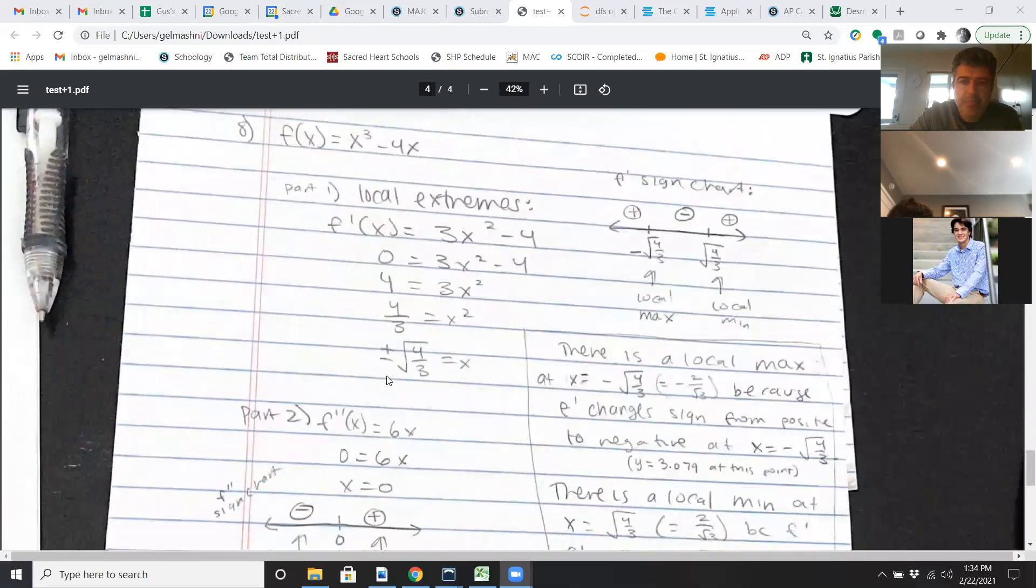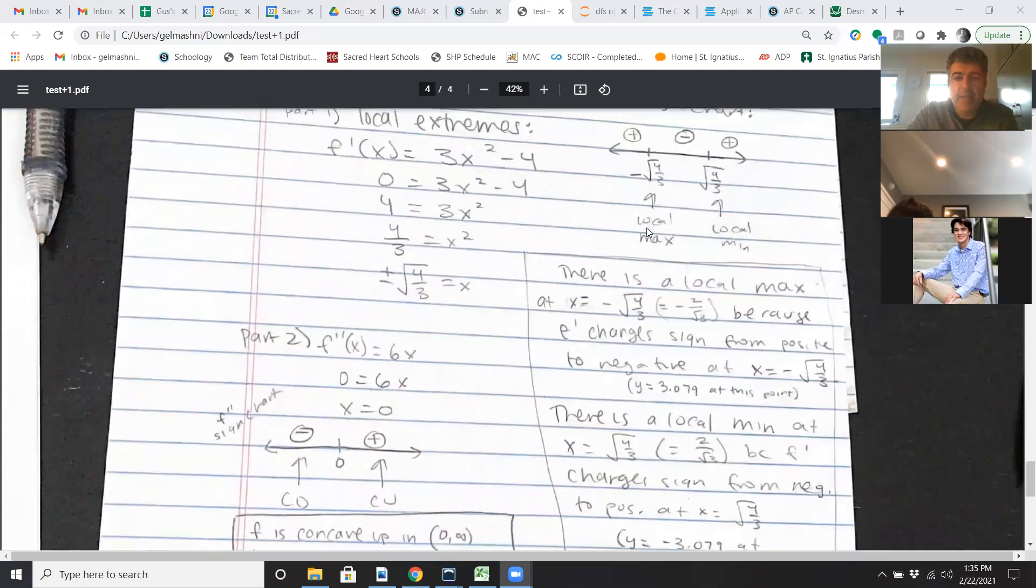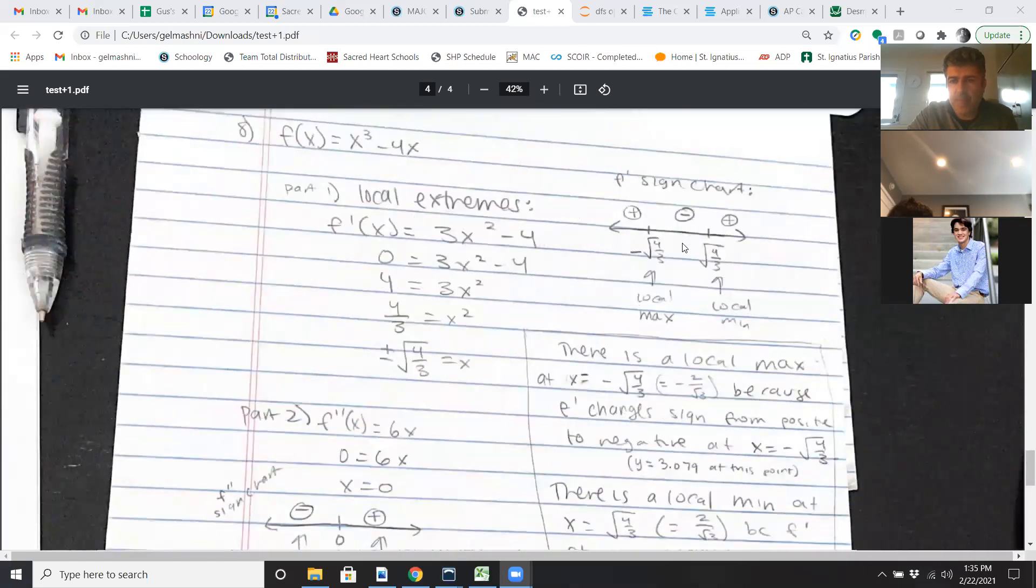Lastly, for number eight. What you want to do here is take the derivative again. Really easy to do. Set it equal to zero. Solve for x. That's where your potential local extrema could happen. Do a sign chart. So you're doing the first derivative test. You're trying to see where the derivative is positive and negative. It's positive to the far left and far right. Negative in the middle. Because we go from positive to negative, that's the local max at negative root four over three. You go from negative to positive. That's local min at positive square root of four over three. And you have to write it the right way. If you just did this stuff and stopped there, I probably didn't give you all the points for it.